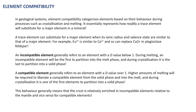A nice example is europium 2+ which is similar in size and stature to calcium 2+. Calcium 2+ is a major constituent in the plagioclase feldspar crystal lattice, so during crystallization of plagioclase some calcium may be substituted by europium. Another example is nickel into olivine: nickel 2+ has similar properties to magnesium 2+, and these elements can be substituted for one another in the crystal lattice of olivine.